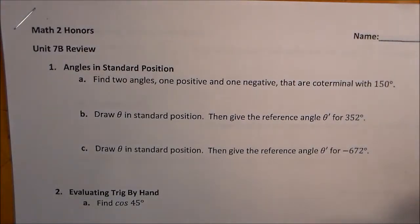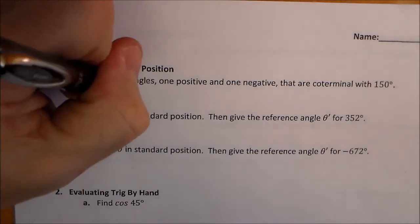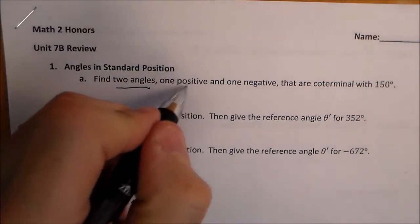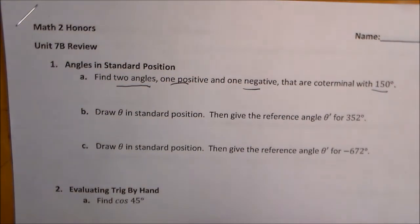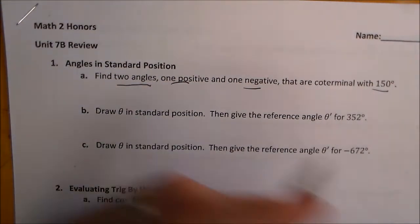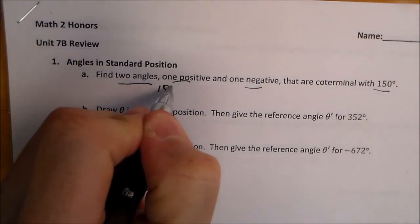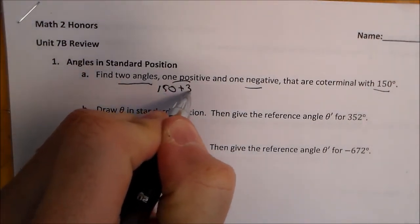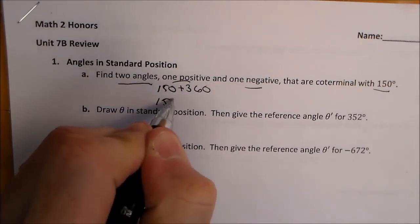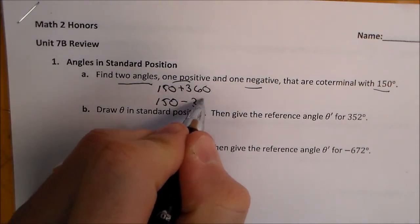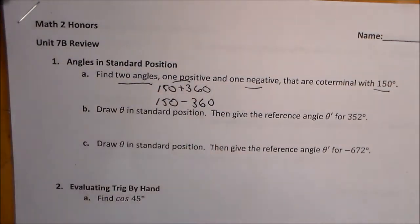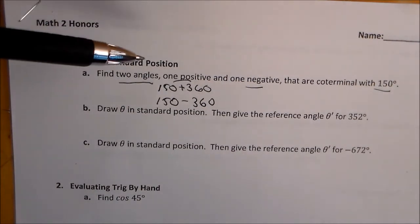This is our Honors II Unit 7B review. We start with our angles in standard position. We need to find two angles, one positive and one negative, that are coterminal with 150 degrees. Whenever we see this, we want to add 360 and subtract 360 from the given angle to get coterminal angles.